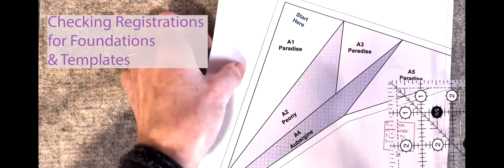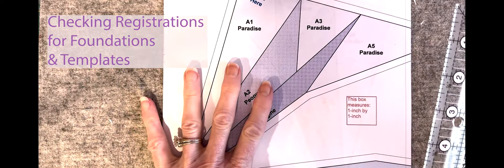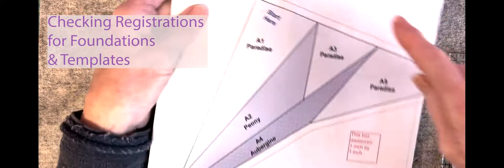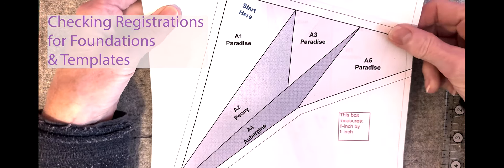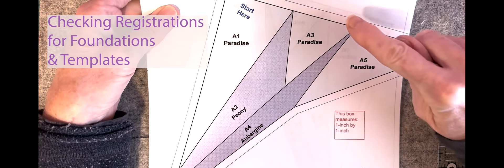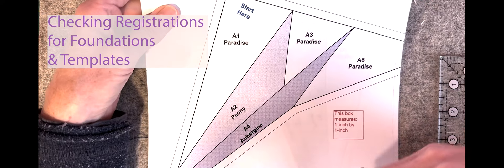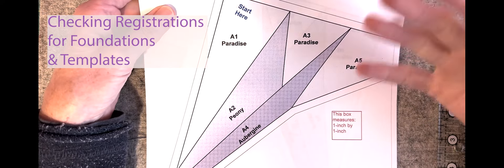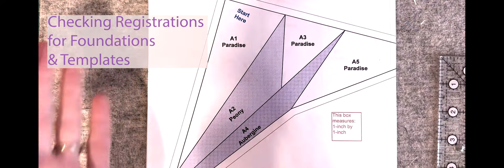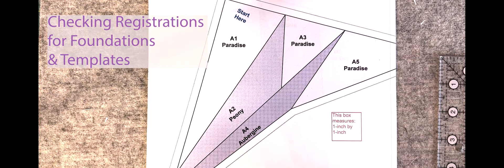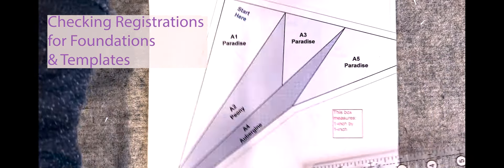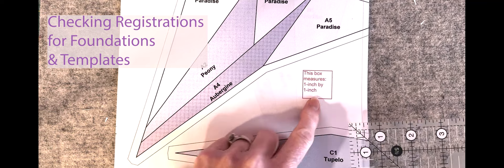You always want to make sure that they're the same. If you get multiple - in this case this particular pattern tells me to print four copies - you want to make sure all four copies come the same way. You either print them all from the original file or you copy them all, but don't mix and match because they can be different sizes.